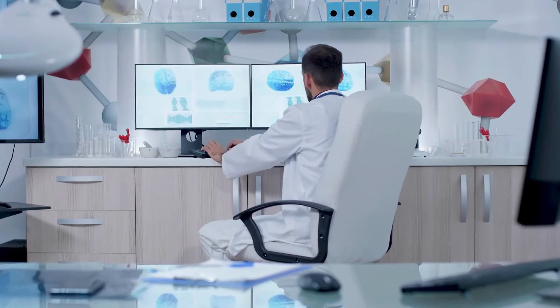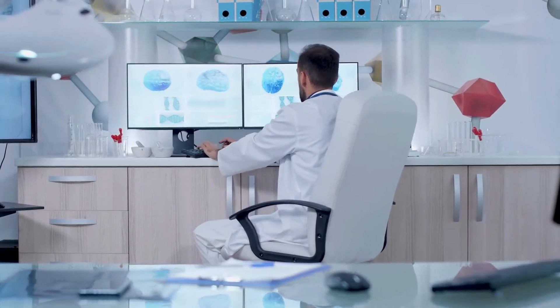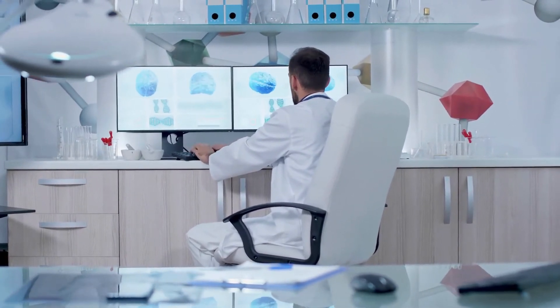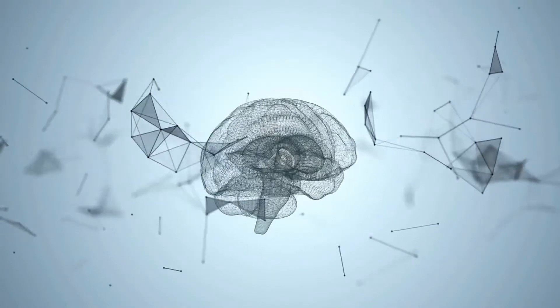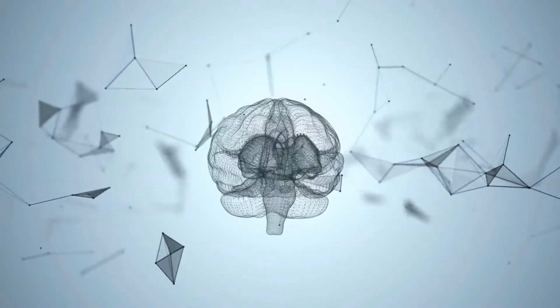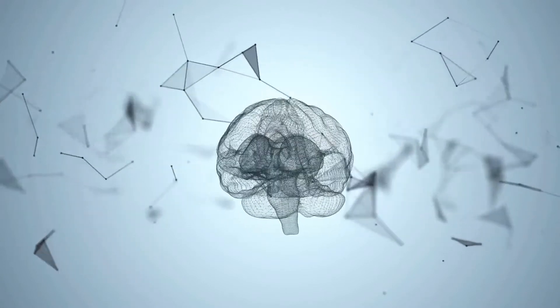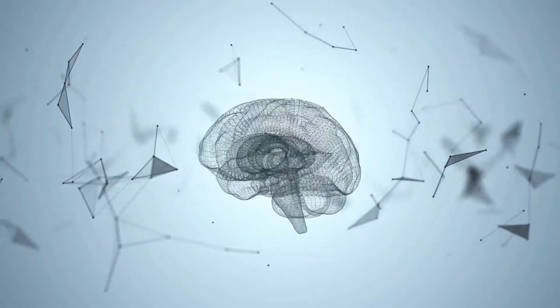Atrial fibrillation, which is an abnormal heart rhythm causing the blood to pool and clot in the upper chambers of the heart, is another principal risk. A portion of the clot can dislodge, traveling through vessels to the brain and resulting in stroke.